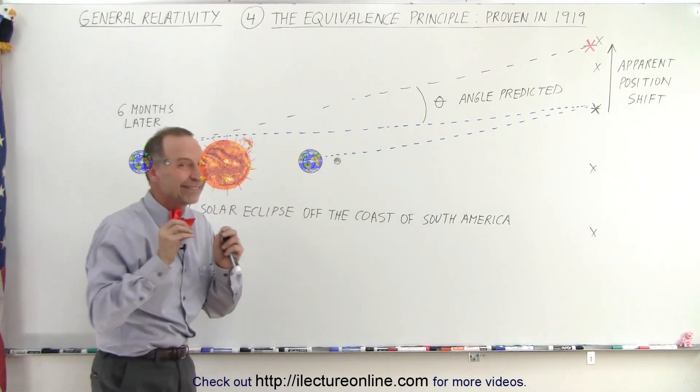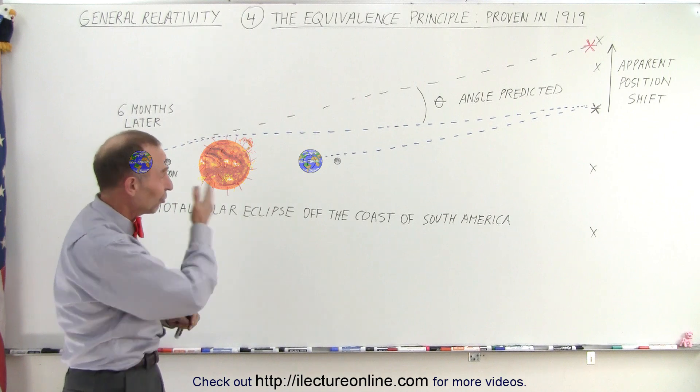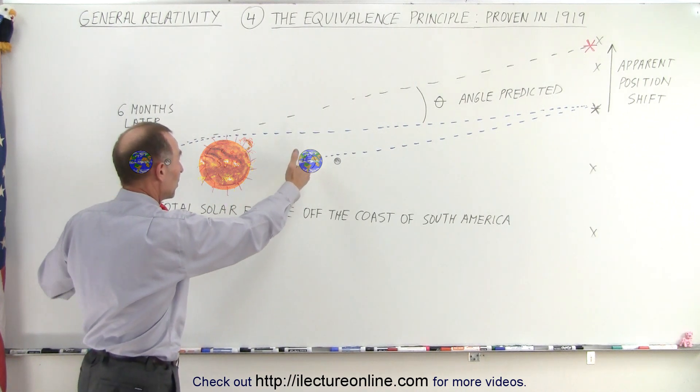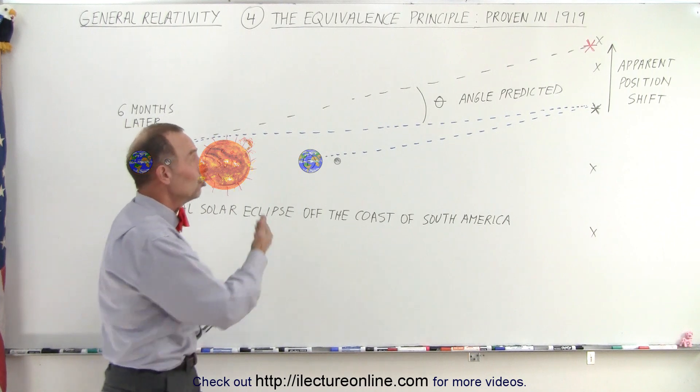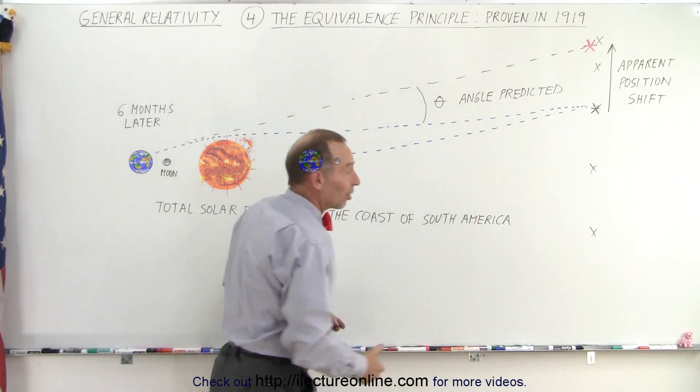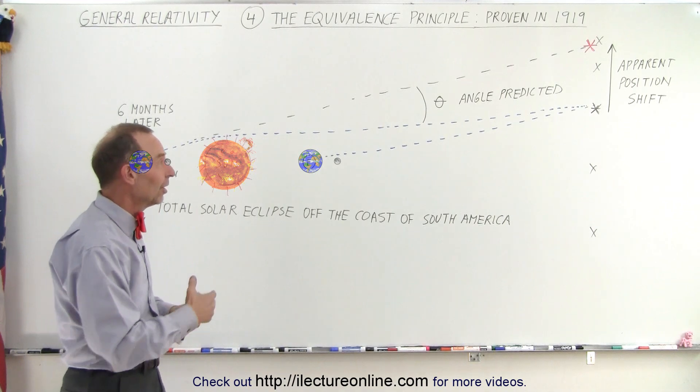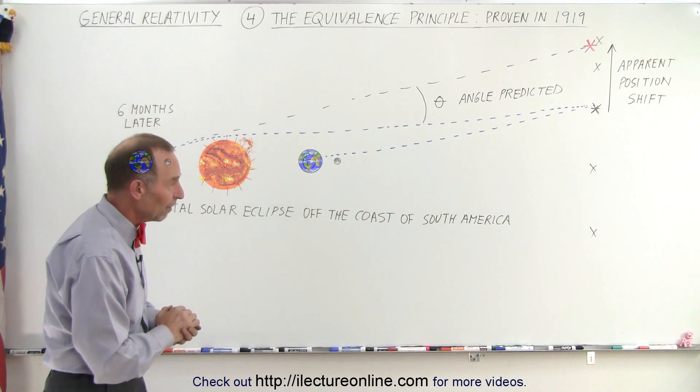That star would look in exactly the same location, because that small distance, twice the distance between the earth and the sun, two astronomical units, would not affect these enormous distances to stars, which are hundreds of thousands of times or millions of times the distance between earth and the sun.